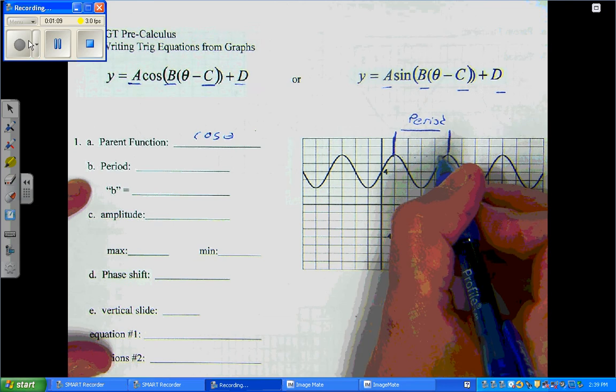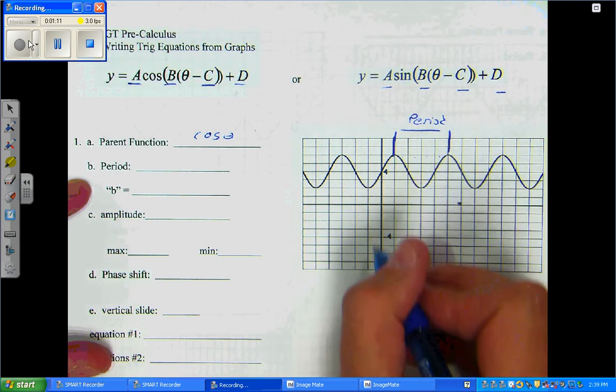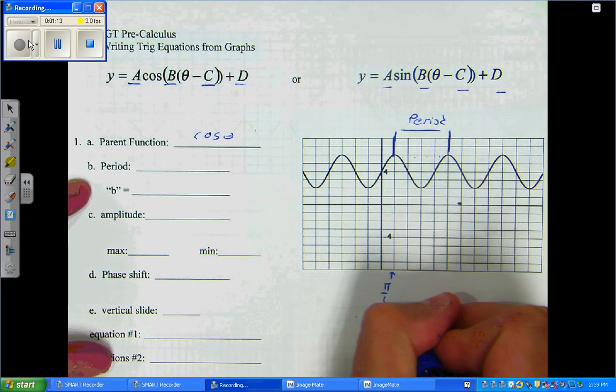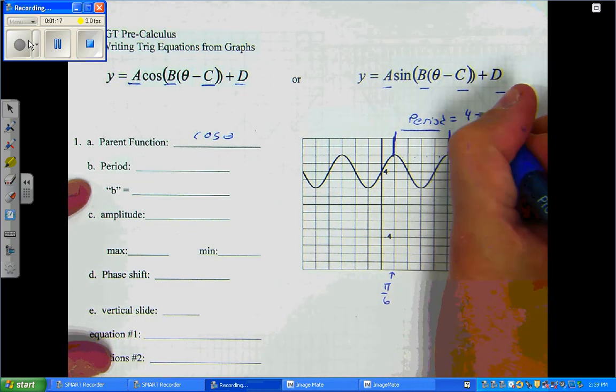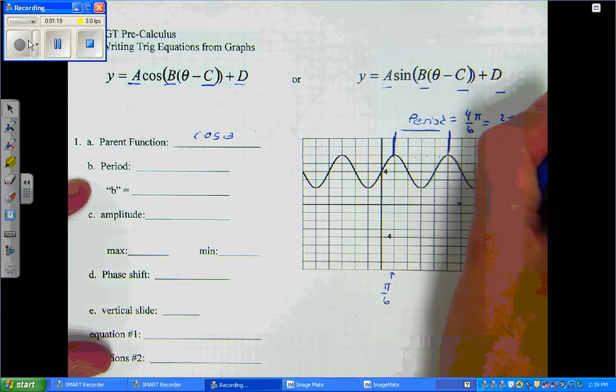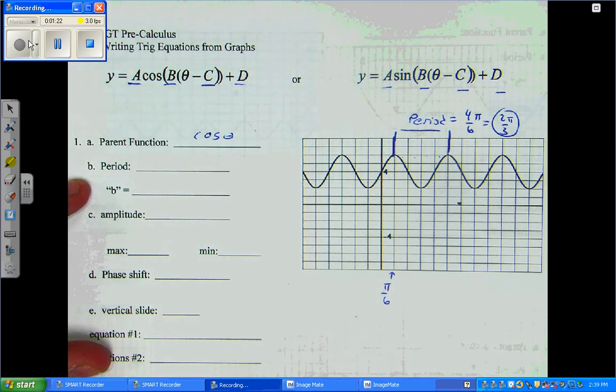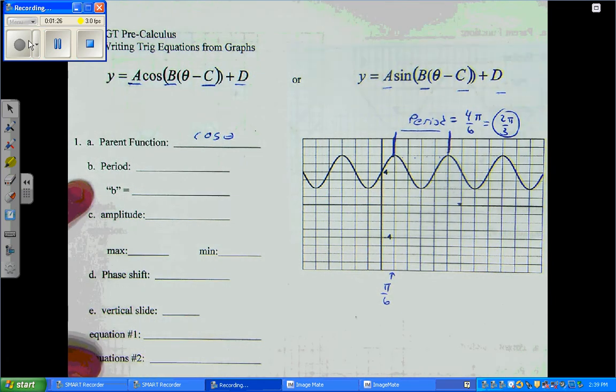There's four tick marks, but hopefully you recall each little tick mark is pi over 6 units. So, the period becomes 4 pi over 6, which is 2 pi over 3. That means the period, the function repeats every 2 pi over 3 radians.